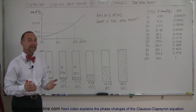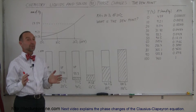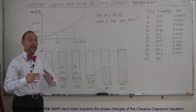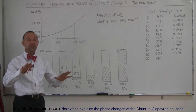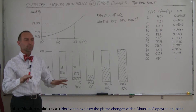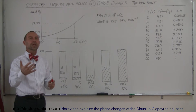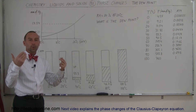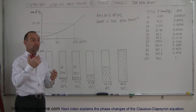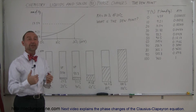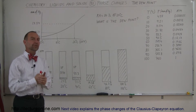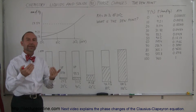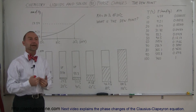Now that we understand relative humidity, let's try to figure out what the dew point is. You may have experienced when you go out in the evening and you touch things and everything is wet, everything is full of water — we always say the dew set in. What's happening there is water vapor is precipitating out of the atmosphere and distributing itself all over the surfaces; it's literally condensing out of the air.